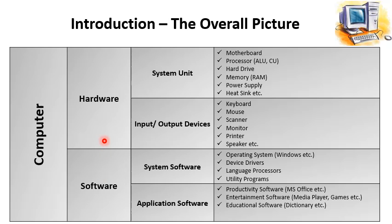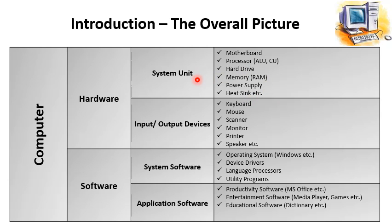We can categorize hardware into two categories: system unit and input/output devices. This is the overall picture of Unit 1 given in your book. The system unit comprises components like the motherboard, processor (which consists of ALU and CU), hard drives, memory (that is RAM), power supply, and heat sink. All these components are enclosed inside the system unit, and we will discuss them in more detail in the coming slides.